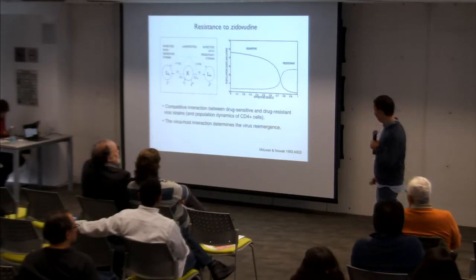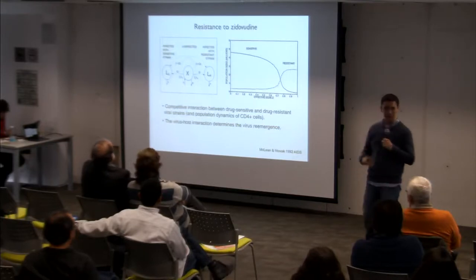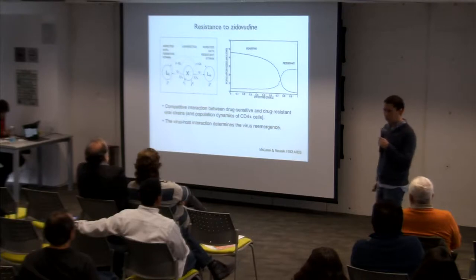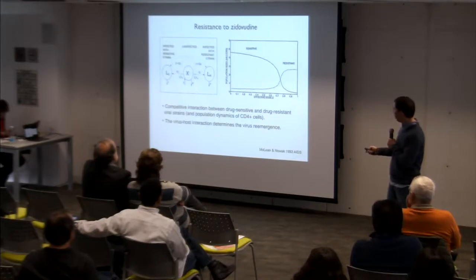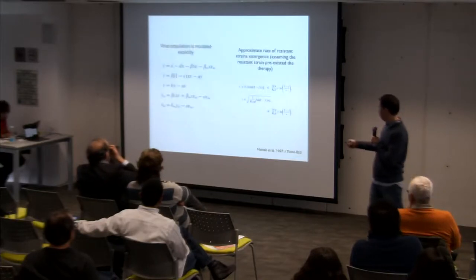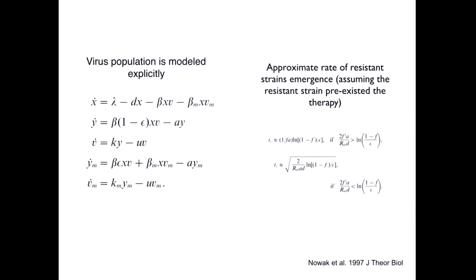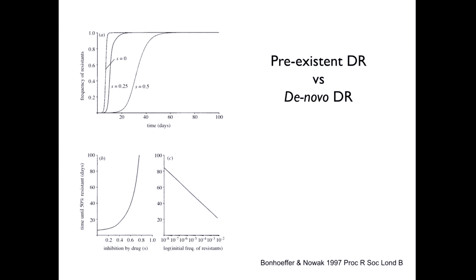For HIV, the main target cells are CD4 cells, which are cells of the immune system — one of the reasons HIV represents such a problem. The models started getting a bit more complex; the viral population was modeled explicitly. Several questions were asked, like what is the rate of emergence of resistant strains, comparing the probability of pre-existent drug resistance versus de novo drug resistance.